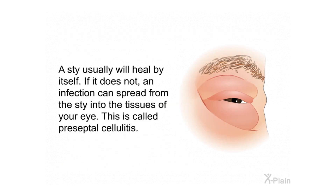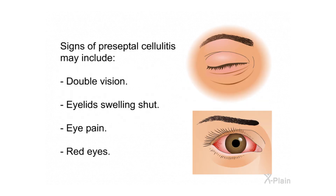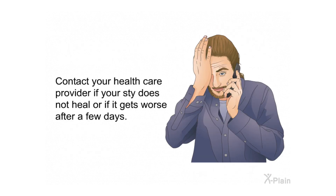A stye usually will heal by itself. If it does not, an infection can spread from the stye into the tissues of your eye — this is called preseptal cellulitis. Signs of preseptal cellulitis may include double vision, eyelids swelling shut, eye pain, and red eyes. Contact your health care provider if your stye does not heal or if it gets worse after a few days.